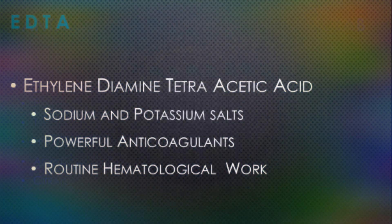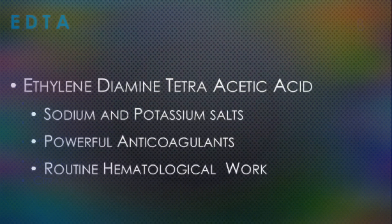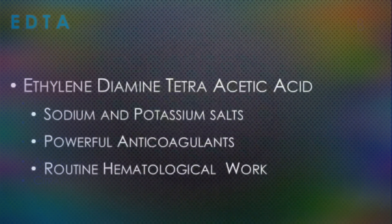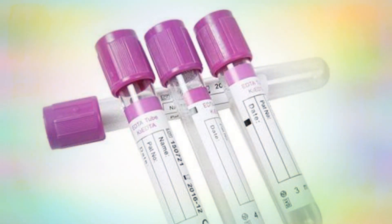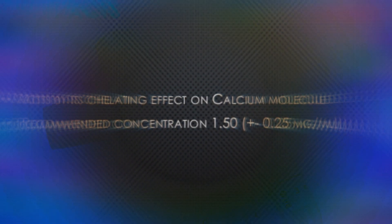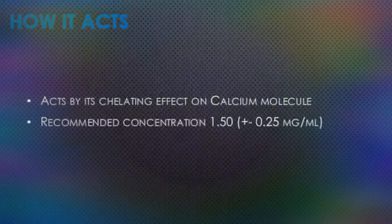The first anticoagulant is ethylene diamine tetra-acetic acid, or EDTA. The sodium and potassium salts of EDTA are powerful anticoagulants and are the anticoagulants of choice for routine hematological work, most importantly for the complete blood count (CBC). EDTA acts by its chelating effect on calcium molecules, and the recommended concentration of dipotassium EDTA is 1.50 ± 0.25 mg per ml of blood.